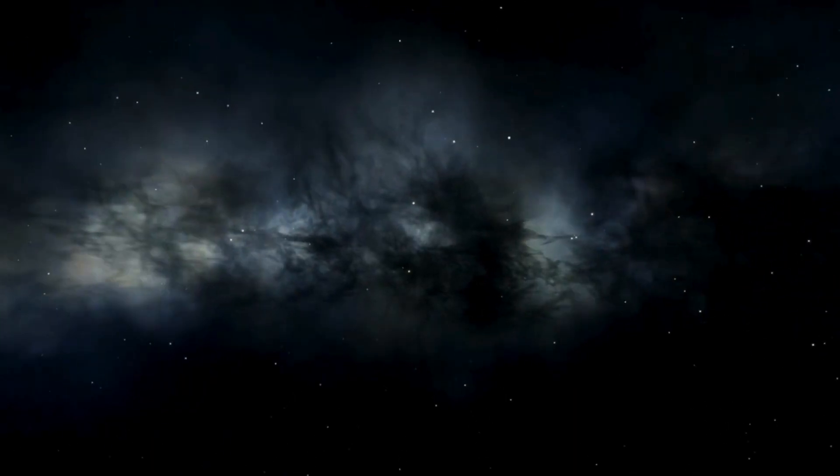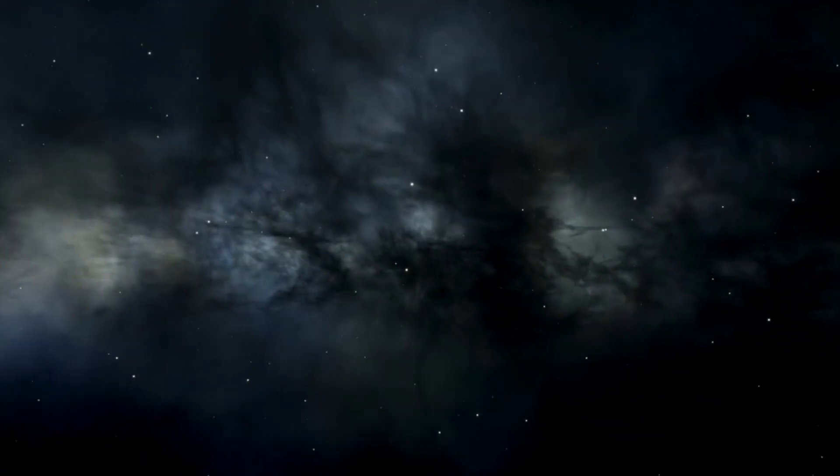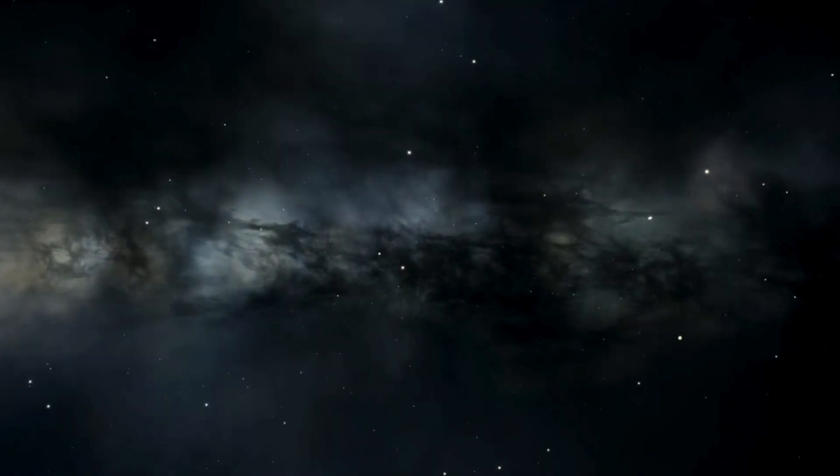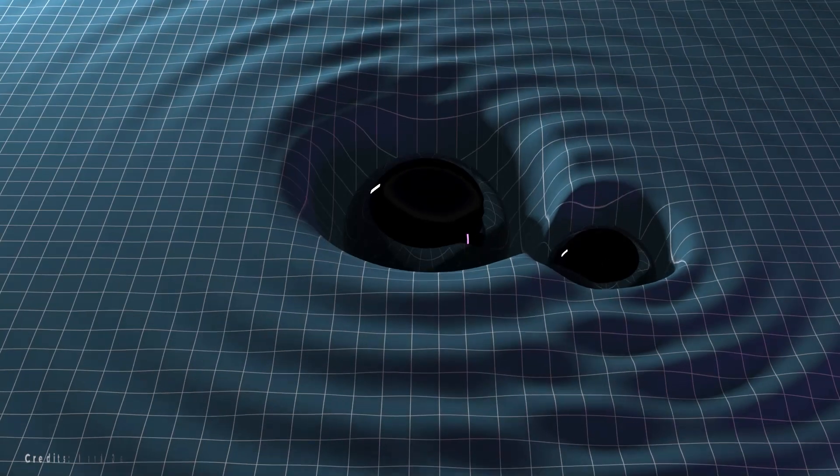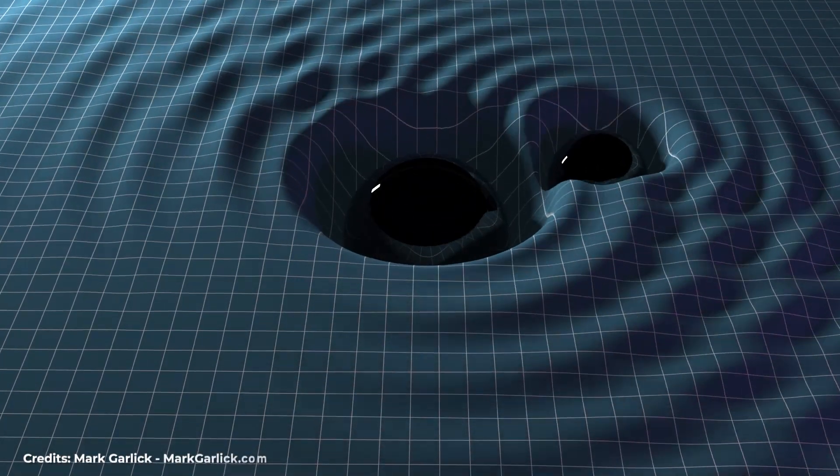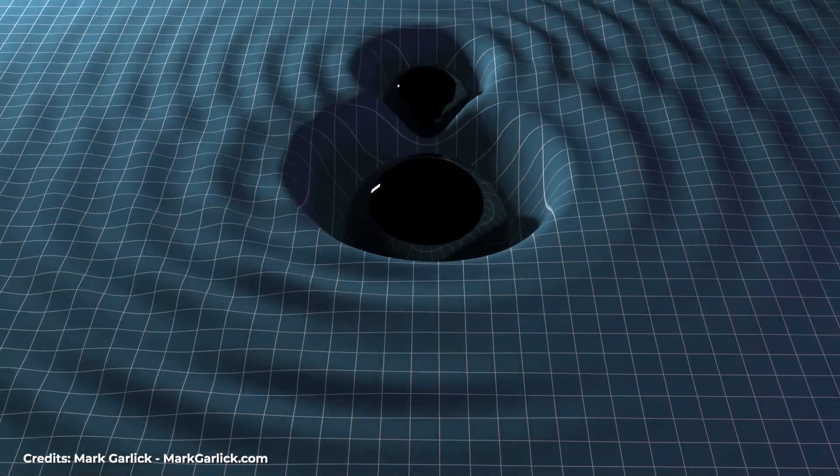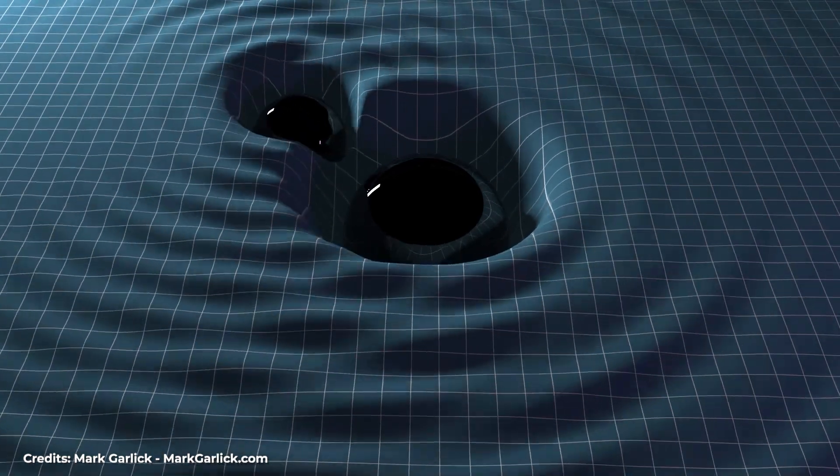Additionally, the concept of quantum hair posits that black holes have unique quantum imprints in their gravitational fields. These imprints, or hair, could theoretically be retrieved to reveal information about the black hole's origin and the matter that fell into it.